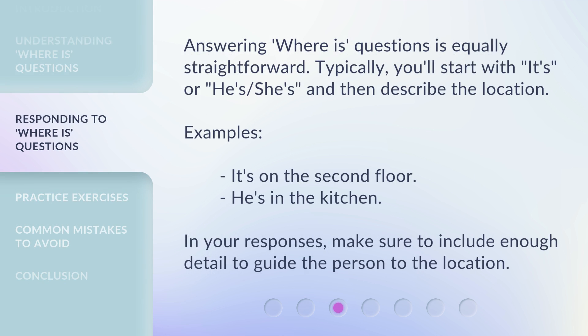Answering 'Where is' questions is equally straightforward. Typically, you'll start with 'It's,' 'He's,' or 'She's,' and then describe the location. Examples: 'It's on the second floor.' 'He's in the kitchen.' In your responses, make sure to include enough detail to guide the person to the location.